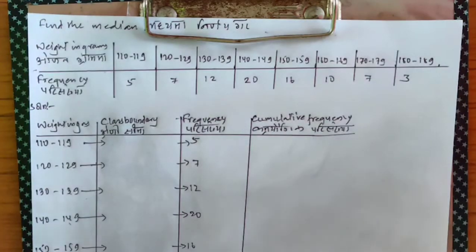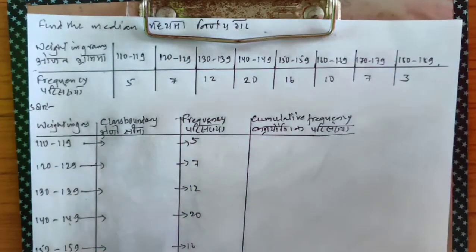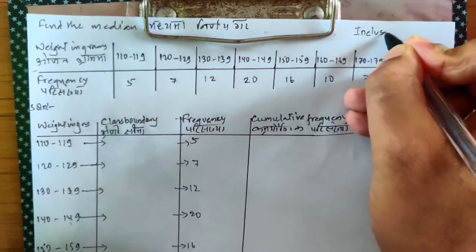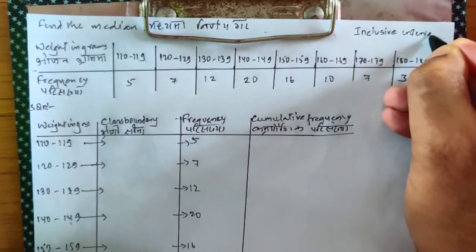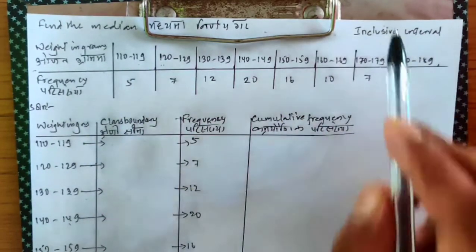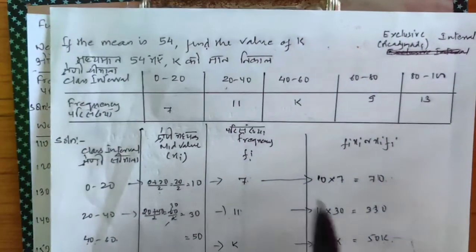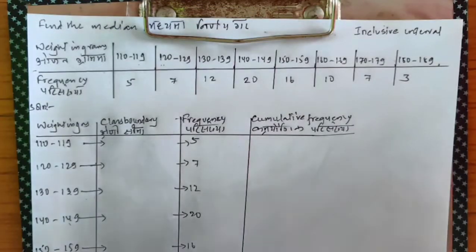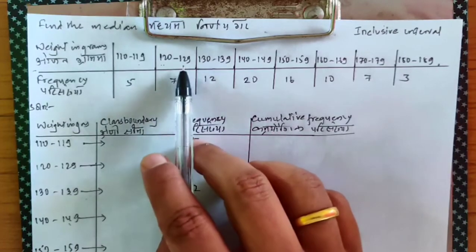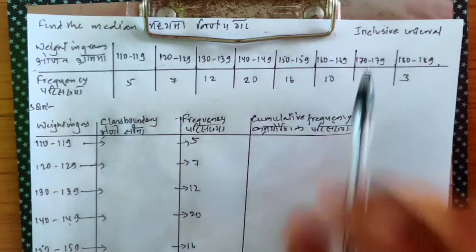Now if you see out here, it ends in 119 and does not start from 119 — it starts from 120. So this is not your ready-made interval; this is an inclusive interval. Ends in 119, does not start in 119, starts from 120. One more example: ends in 20 and starts from 20 — that is an exclusive interval. This ends in 119, starts from 120; ends in 129, starts from 130. If it had started from 129 it would be exclusive, but since it starts from 130, it's an inclusive interval.